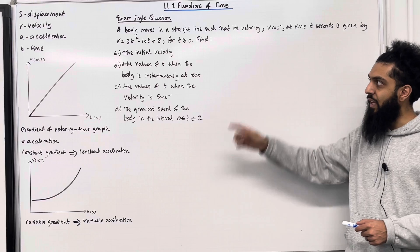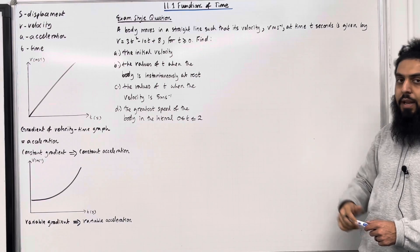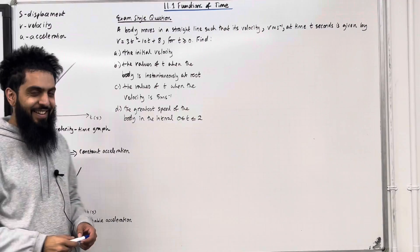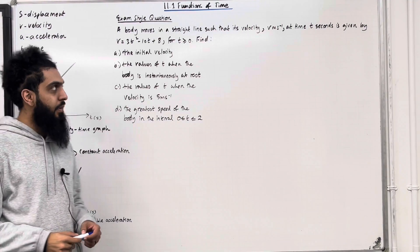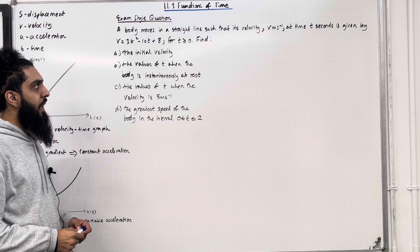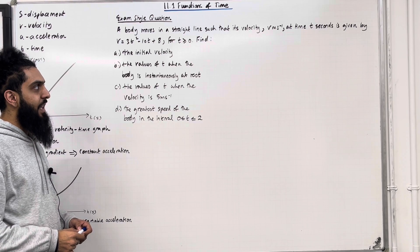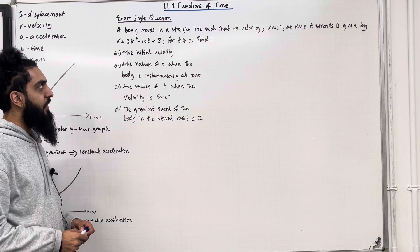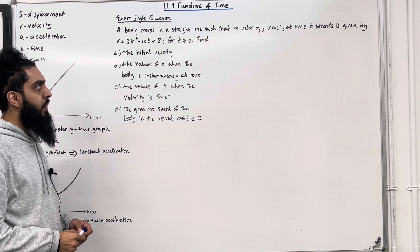These are the key facts of 11.1 functions of time. I'll be implementing these key facts within this exam style question. Let's have a look at an exam style question. A body moves in a straight line such that its velocity v meters per second at time t seconds is given by v equals 3t squared minus 10t plus 8, for t is greater than or equal to 0.